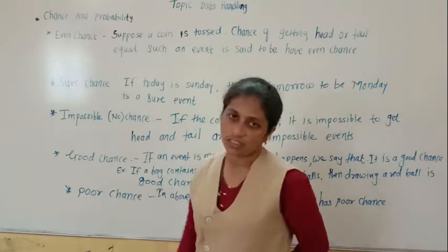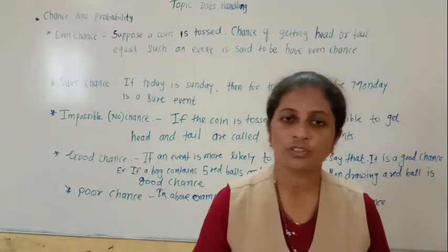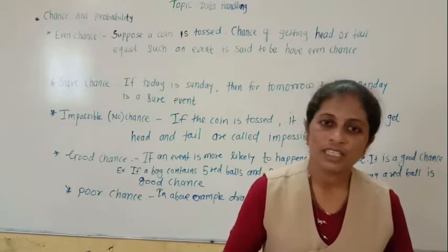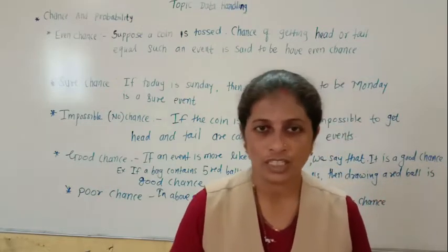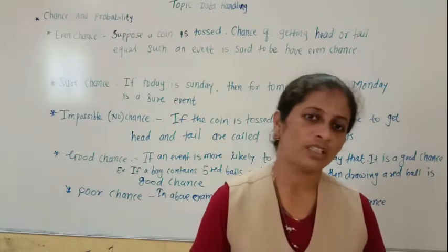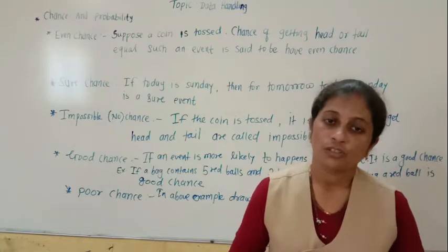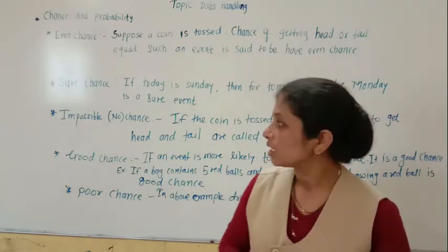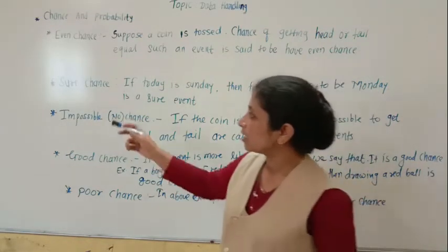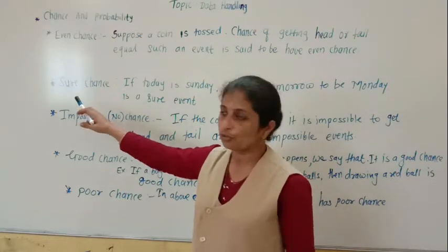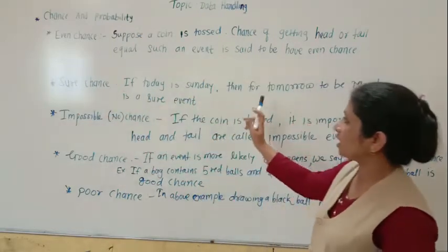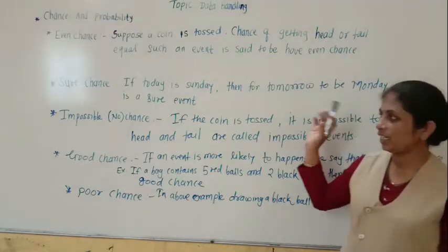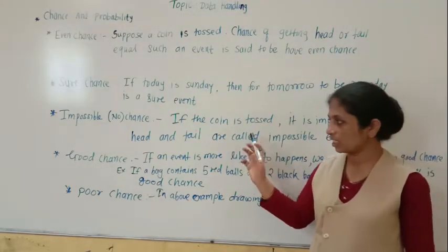Next is sure chance. If anyone says today is Sunday and tomorrow is Tuesday — is it possible? It is impossible. If today is Sunday, then tomorrow is Monday. Such an example is of the sure chance. If today is Sunday, then tomorrow will be Monday — it is a sure event, meaning sure chance.